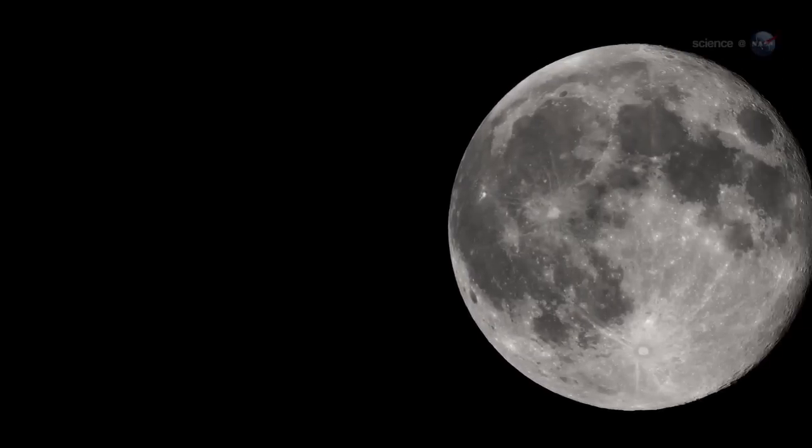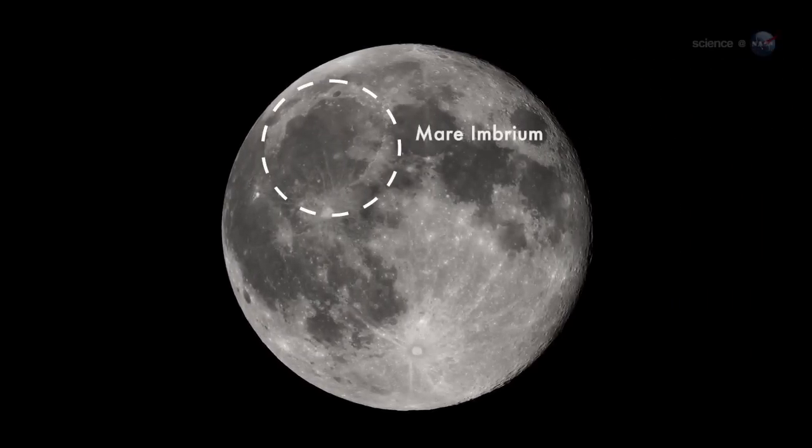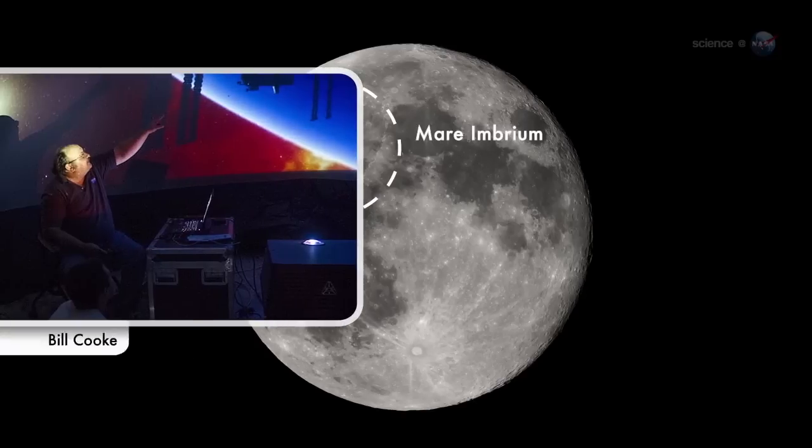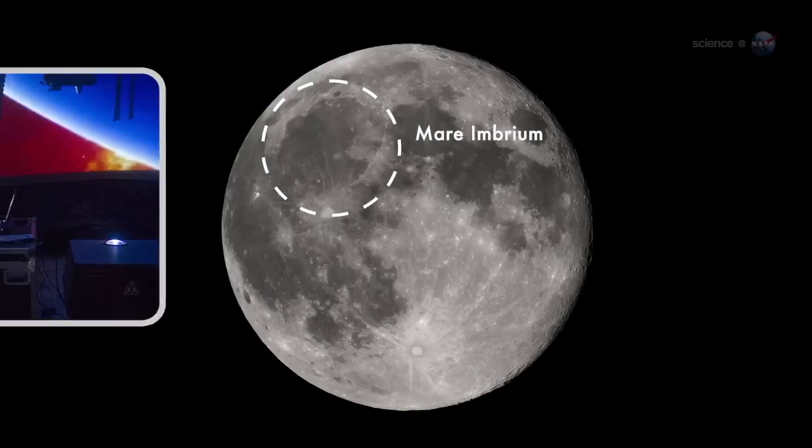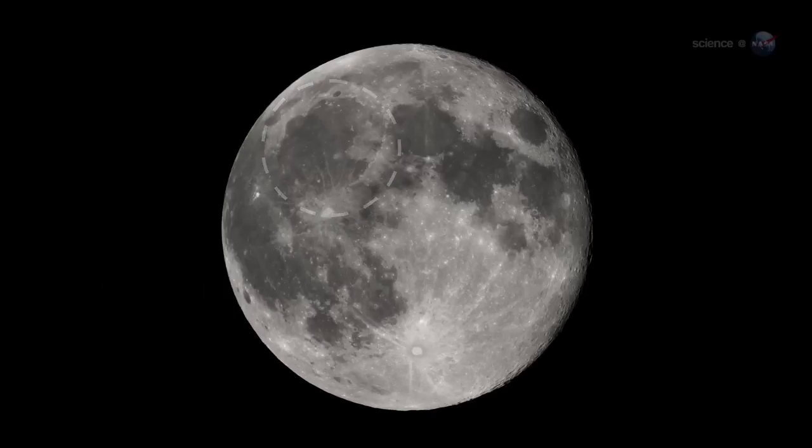On March 17, 2013, an object about the size of a small boulder hit the lunar surface in Mare Imbrium, says Bill Cook of NASA's Meteoroid Environment Office. It exploded in a flash nearly ten times as bright as anything we've ever seen before.